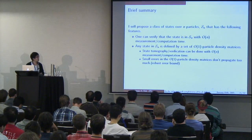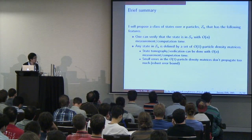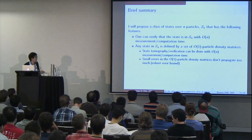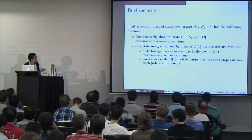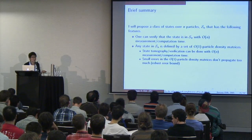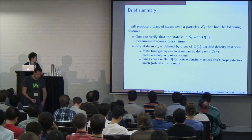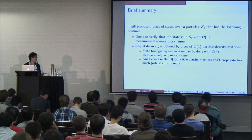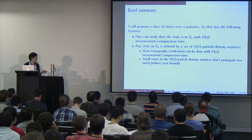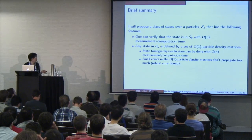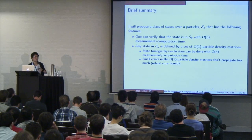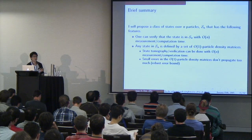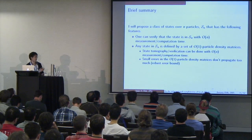So a high-level summary of this talk is the following. I will propose a class of states over N qubits, S,N, which has the following properties. One can verify that the state is in S,N with order-N measurement or computation time, so it's very efficient. Any state in S,N is defined by a set of order-1 particle density matrices, and therefore you can actually perform state tomography or verification in time order N. Small errors in those density matrices don't propagate too much — I have a robust error bound in terms of those.